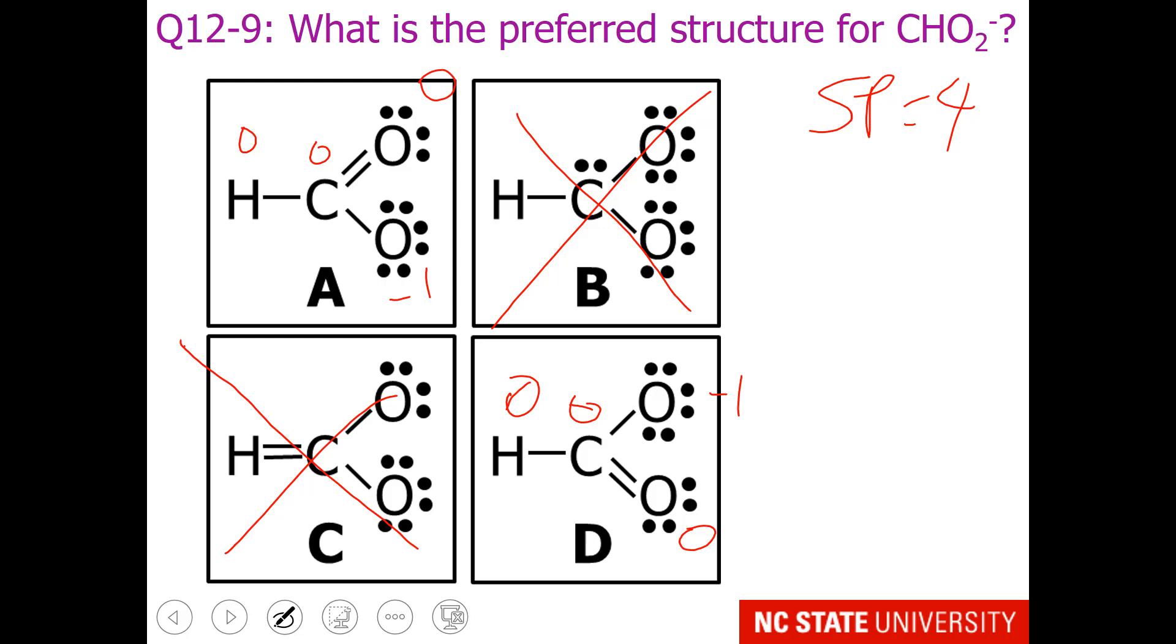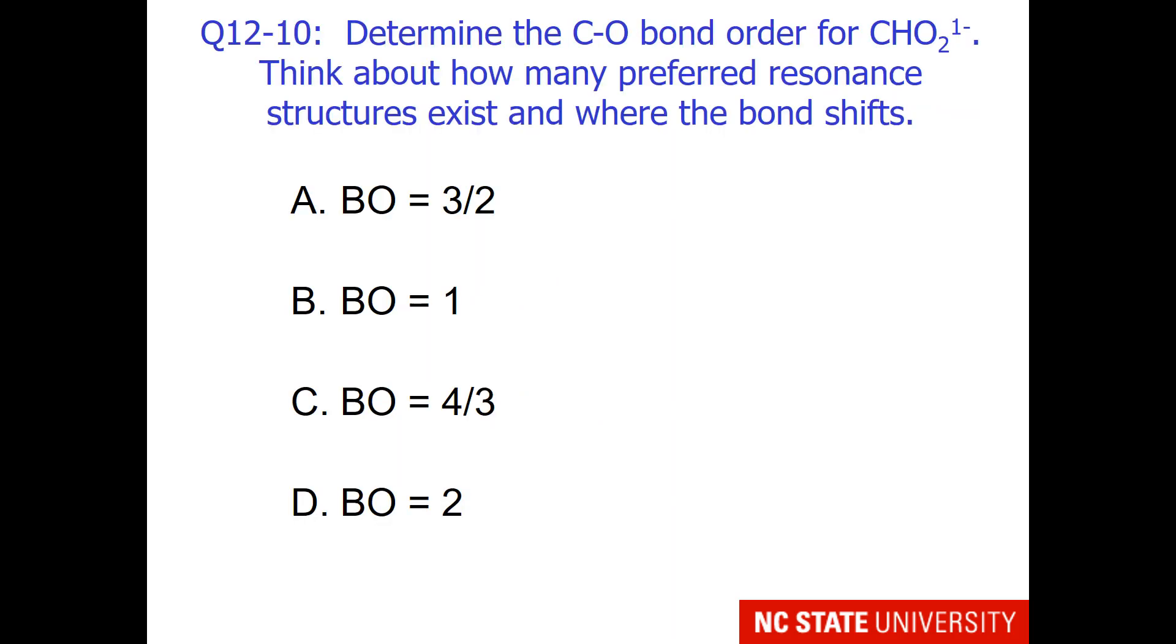There's a minus 1 formal charge on the oxygen for A, and there is a minus 1 formal charge on the oxygen for D. So there are two answers for this question. Please input one of them into your assignment.